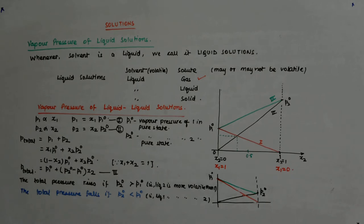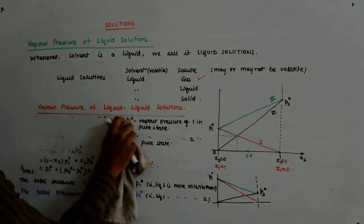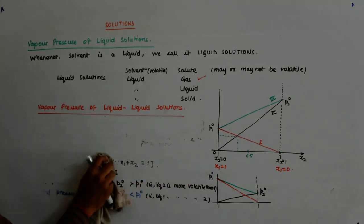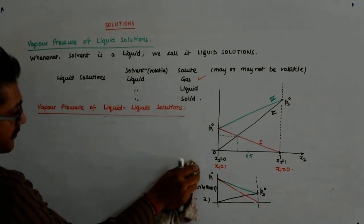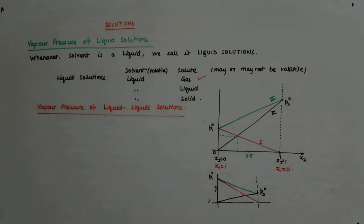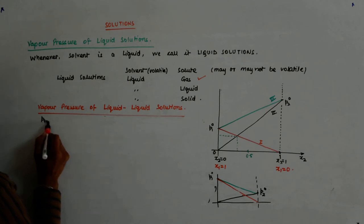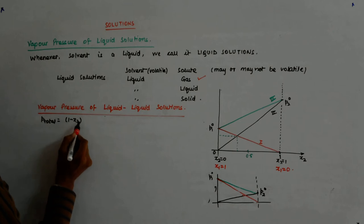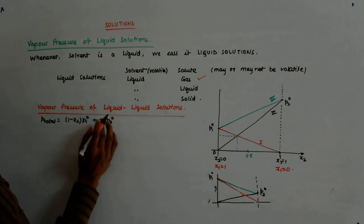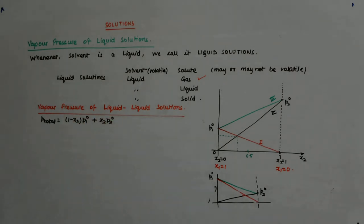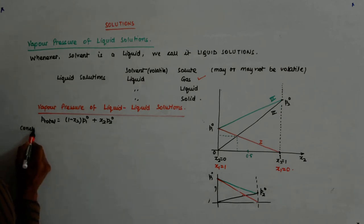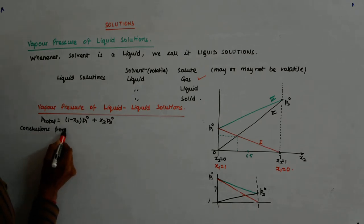So, let us try to write the conclusions that we draw from this graph. We have already discussed them. Do I erase this? So, fine. Conclusions from the Raoult's law. We have this equation. We had P total is equal to 1 minus x2, P1O plus x2, P2O. Correct?